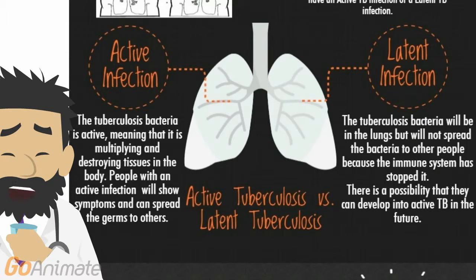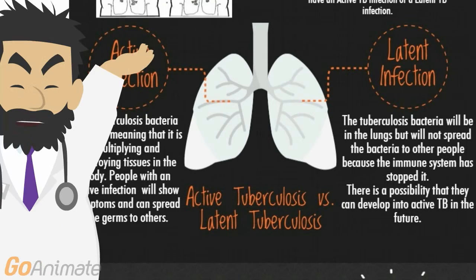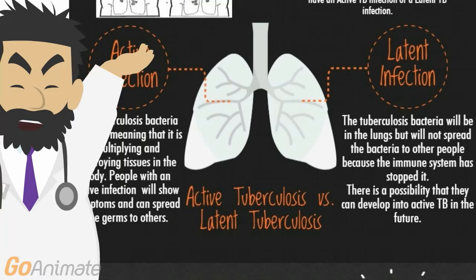People with an active infection will show symptoms and they are capable of spreading the germs to others. Now what about latent infection? Basically, with a latent infection, your immune system stopped it from spreading — it locked it down. People with a latent infection cannot spread the bacteria to others, but they can develop active TB in the future.